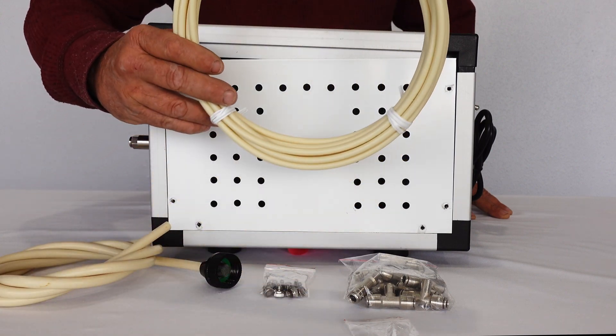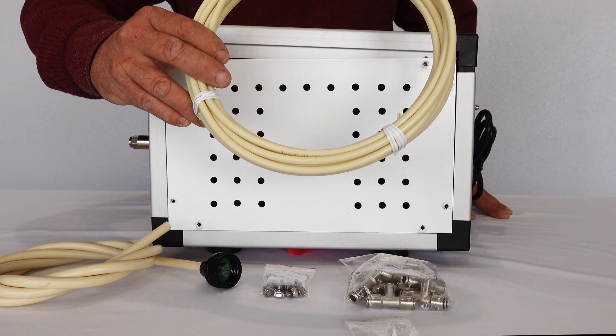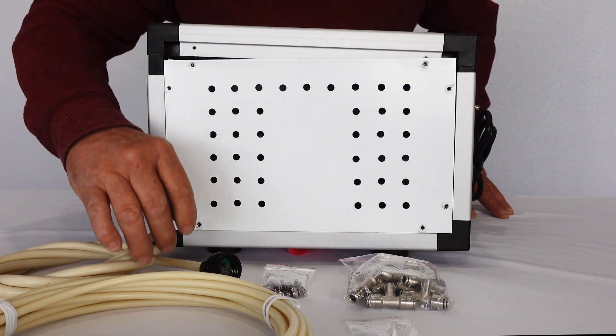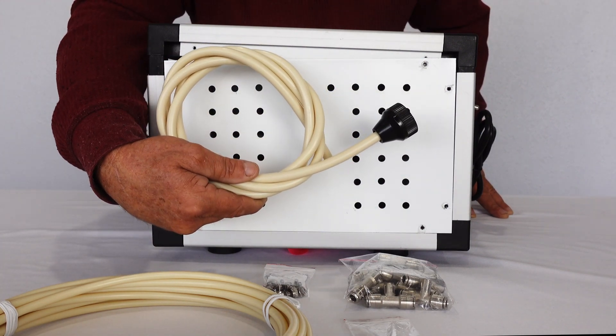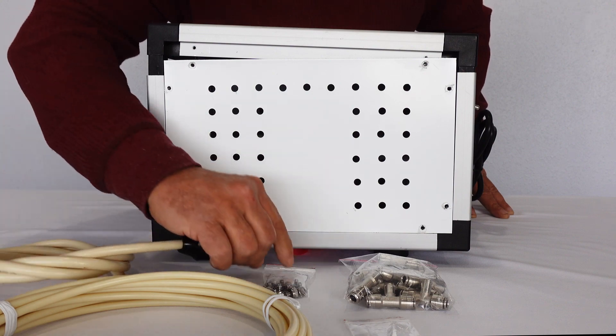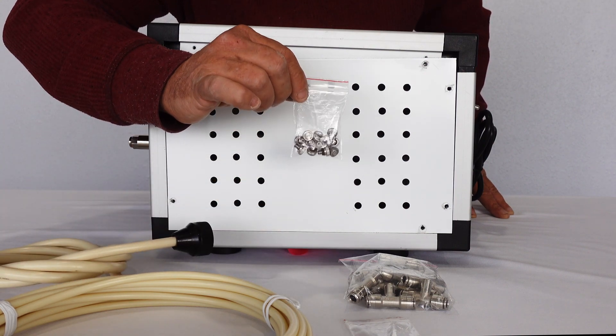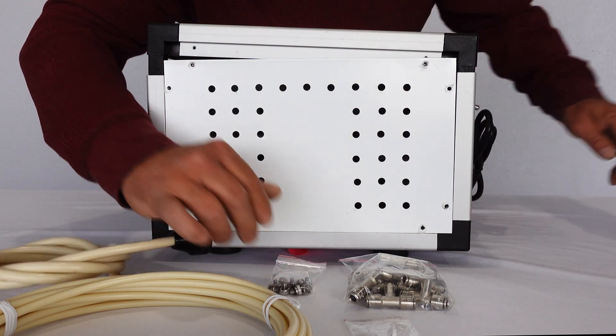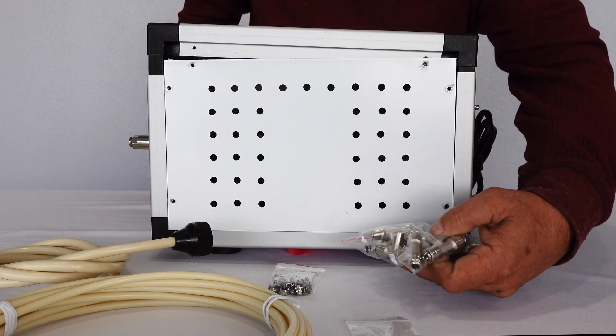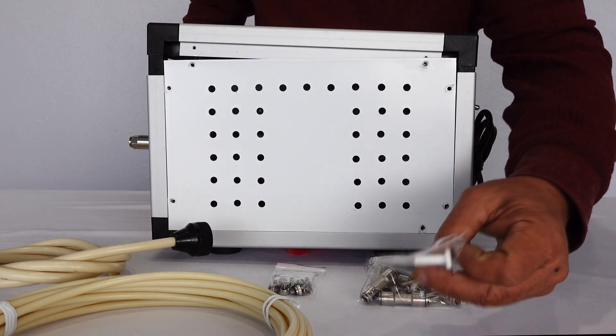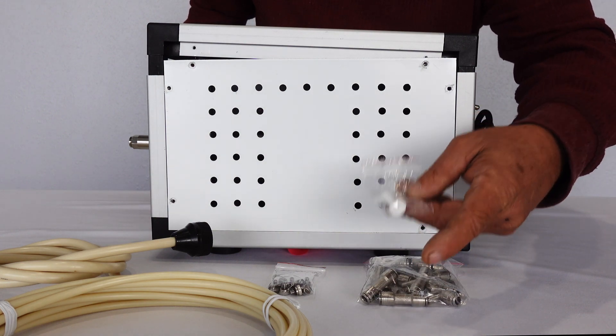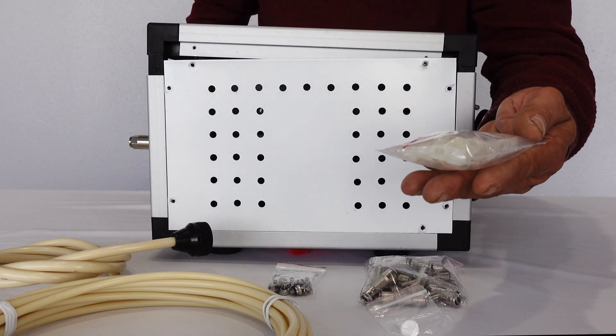You've got your tubing, you've got your feed line, your nozzles, your misting tees, end plug, and your clamps.